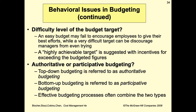Regarding the difficulty level of budget targets: an easy budget may fail to encourage employees to give their best efforts, while a very difficult target can discourage managers from even trying. A highly achievable target is suggested with incentives for exceeding budgeted figures. Top-down budgeting is referred to as authoritative budgeting, while bottom-up budgeting is referred to as participative budgeting. Effective budgeting processes often combine the two types.